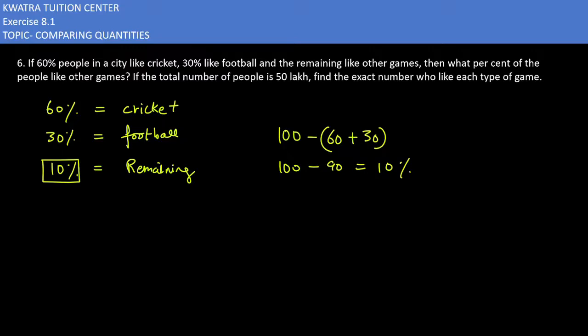If the total number of people is 50 lakh, find the exact number who like each type of game. Total number of people is how much will you get? 50 lakh.